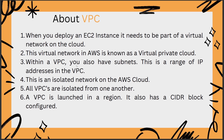Within a VPC, you also have subnets or subnetworks — this is a range of IP addresses in the VPC. This is an isolated network on the AWS cloud; all VPCs are isolated from one another. A VPC is launched in a region.